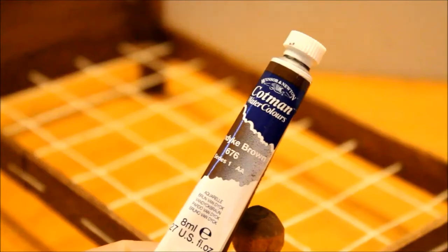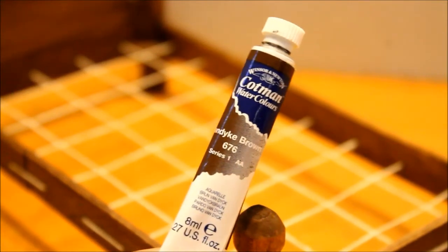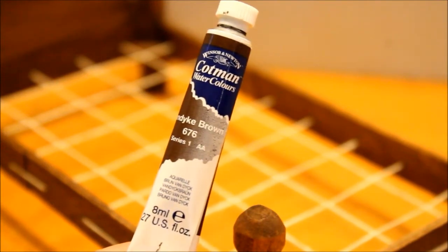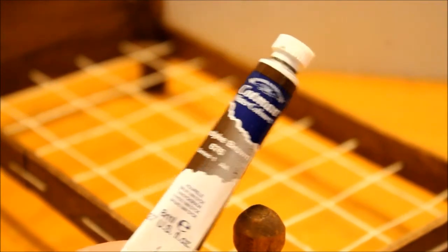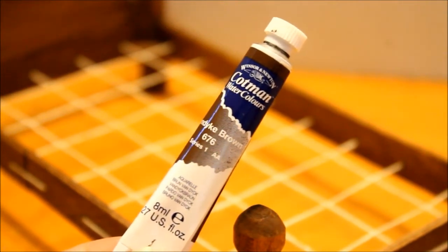This is the watercolor that I used, it's Cotman watercolors, looks like it's Van Dyke Brown number 676. If I did this again I might try to get a lighter color. I was hoping that I could water it down and produce a lighter stain but it still came out pretty dark.